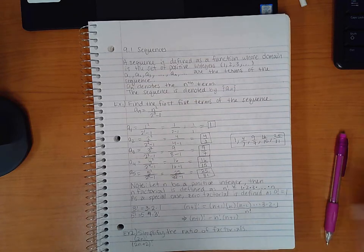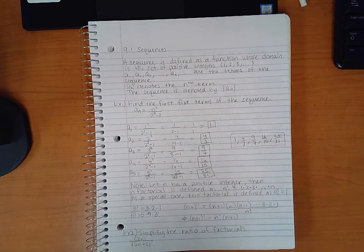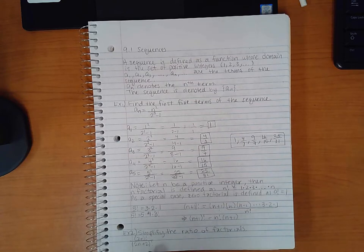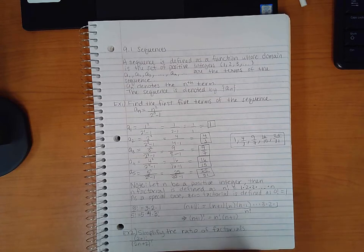So in example 2, it says simplify the ratio of factorials. So notice that the bottom's value that's being factorialized—this expression is bigger than this expression before the factorial, which means this one's probably one that needs to get broken apart cleverly.